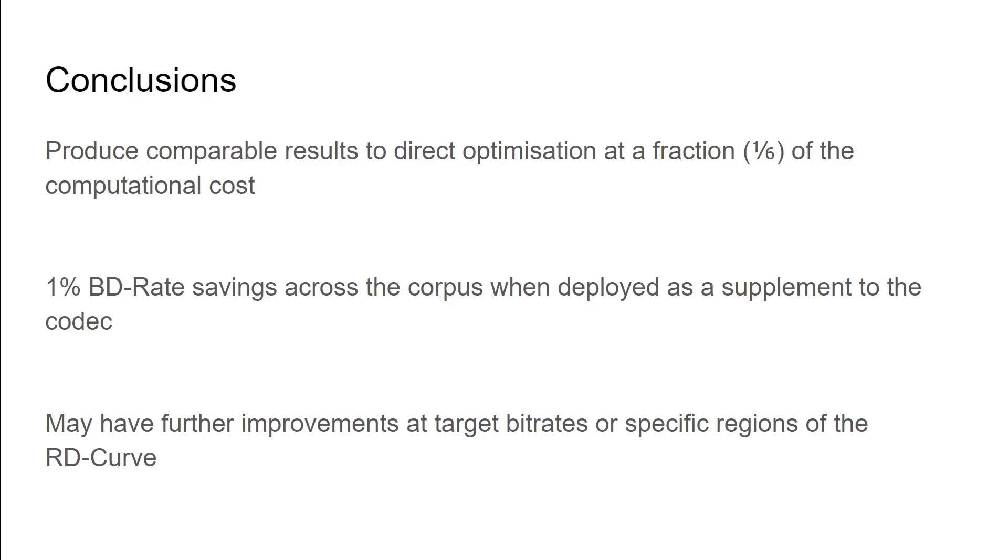We're able to get 1% BD rate savings across the corpus when deployed as a supplement to the codec. We should be able to have further improvements if we focus only at target bitrates or specific regions of the RD curve, instead of taking the entire curve. For example, if we wanted to focus on high bitrates or low bitrates, we might be able to get further improvements. That brings me to the end of my presentation. Thank you for your attention.